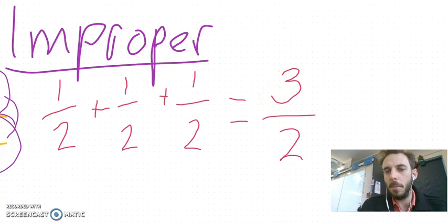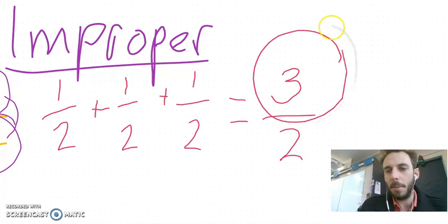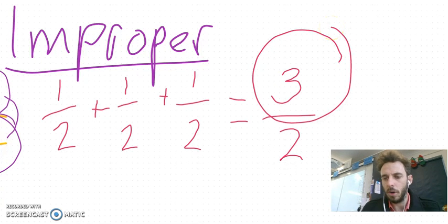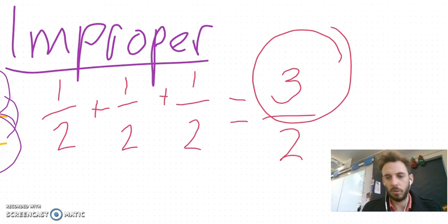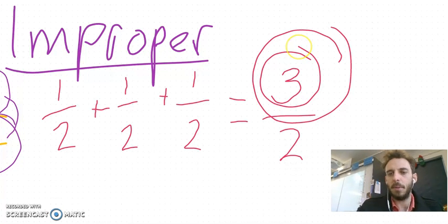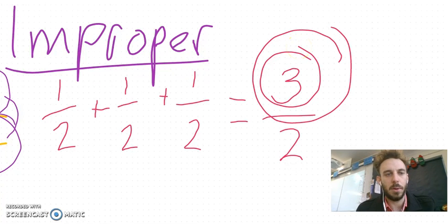When the numerator, which is the number on top, becomes bigger than the denominator down the bottom, that's when we have an improper fraction. There's nothing wrong with improper fractions. We use them all the time. We can add them. We can still subtract them. We can do stuff with them. But that's when the number on top is bigger than the number on the bottom. That's an improper fraction.